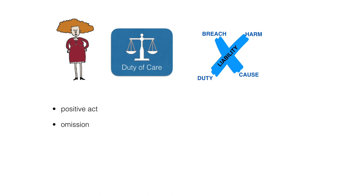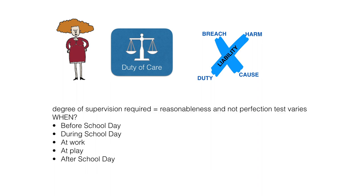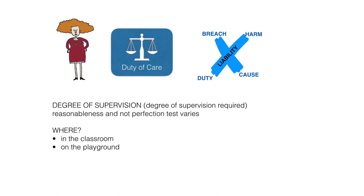Negligence may arise from a positive act or from an omission if it comprises these four elements. Teachers have a duty of care towards their students while they are in the schoolroom, on the playground, or elsewhere on the school premises during the course of the school day. The courts usually require a higher degree of supervision when pupils are instructed in the classroom than when they are on the playground during school breaks.